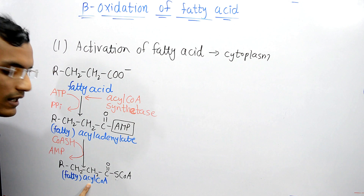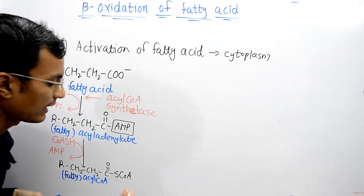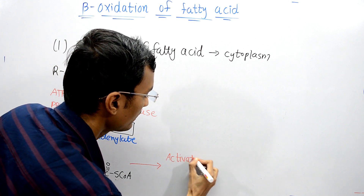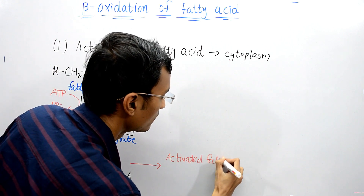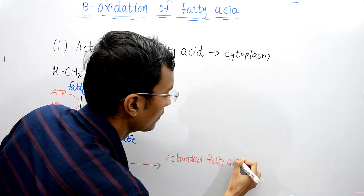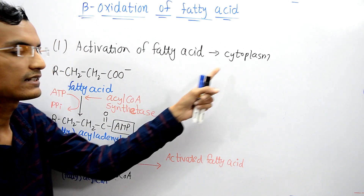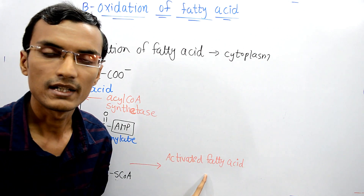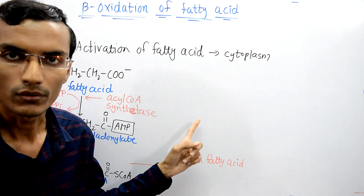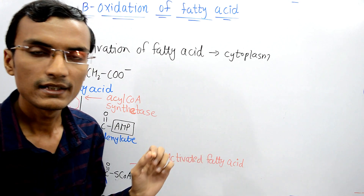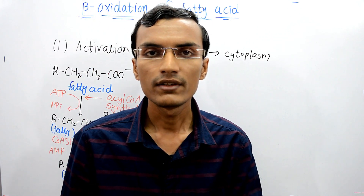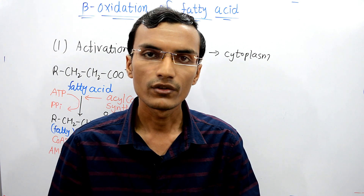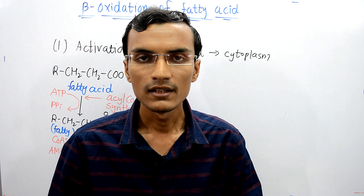This structure — acyl-CoA — is known as the activated form of fatty acid, and it is present in the cytoplasm. The next step is the transport of this activated fatty acid by the carnitine shuttle into the mitochondria, which will be discussed in the next video. I hope this video is helpful. Please hit the like button, share this video with your friends, subscribe to my channel, and thank you for watching.